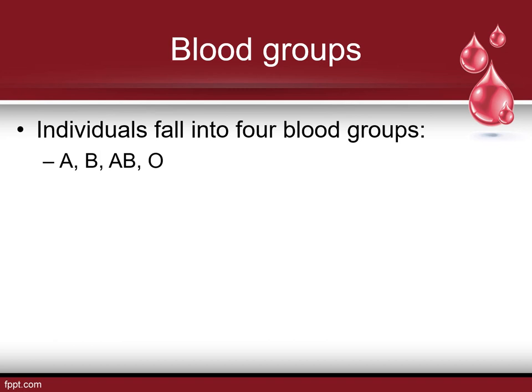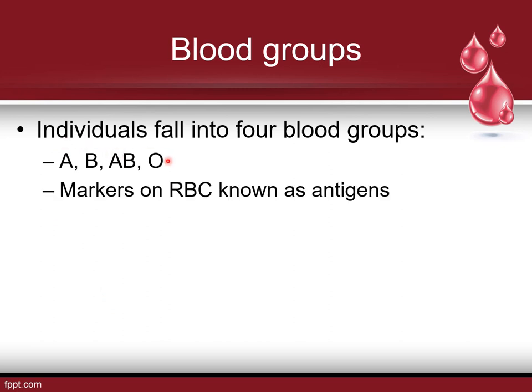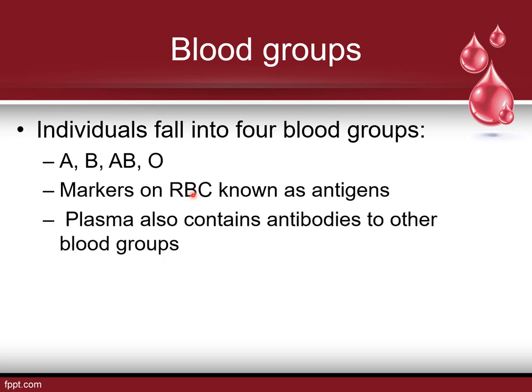We all fall into four basic blood groups: A, B, AB, or O. The way we determine our blood group is determined by a marker on red blood cells known as antigens. Plasma also contains antibodies to other blood groups — this is why we cannot mix different blood types in most cases.